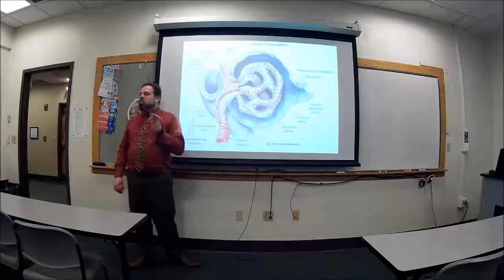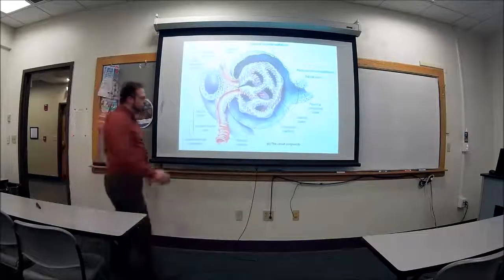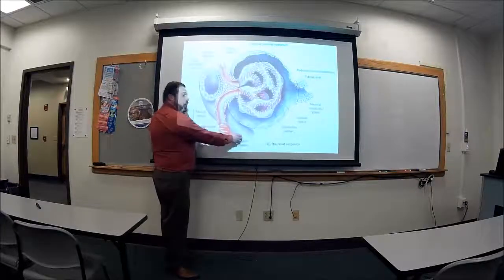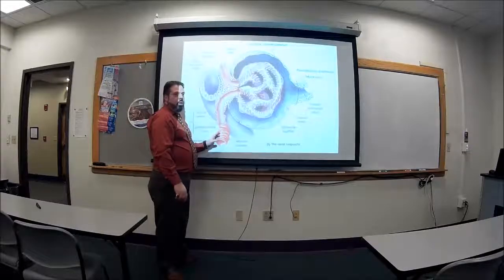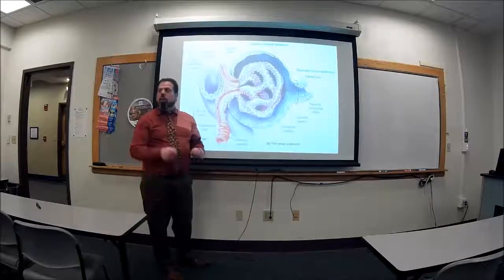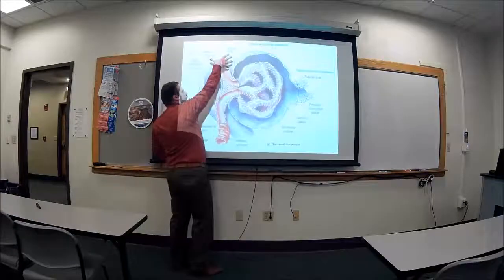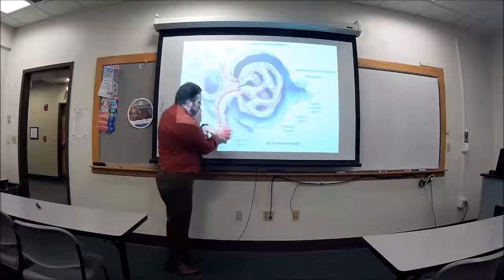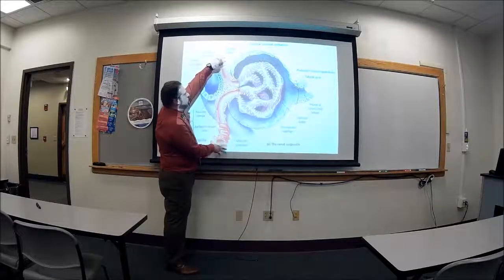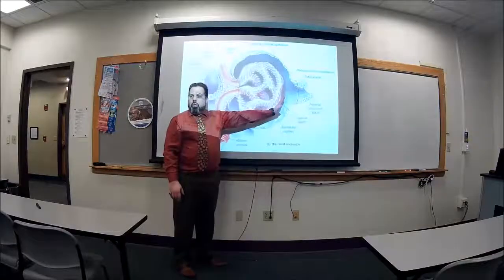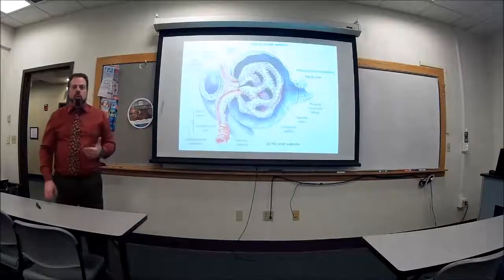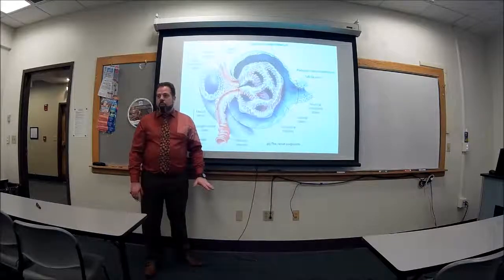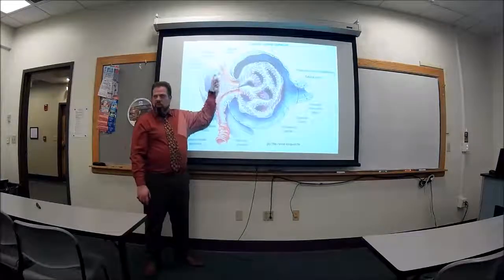Because arterioles have sphincters and venules don't, we have a sphincter on the afferent side and one on the efferent side. If we open up the afferent sphincter, more flow goes in. If we tighten the efferent sphincter, flow backs up and GFR increases. So by opening one and closing the other, the GFR will increase. The autonomic nervous system controls this. It's a unique, weird setup — arteriole to capillaries, back to arteriole — but it works.